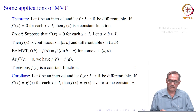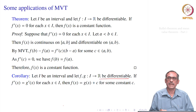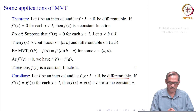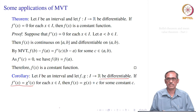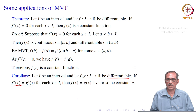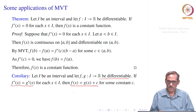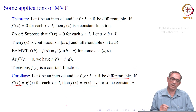This result can be posed another way. Suppose f and g are differentiable on an interval I and f'(x) = g'(x) for every x in I. Then consider h(x) = f(x) − g(x). Its derivative h'(x) = 0 on I, so by the previous result h is constant. Therefore f(x) = g(x) + c for some constant c. If two functions have the same derivative on an interval, they differ by a constant.